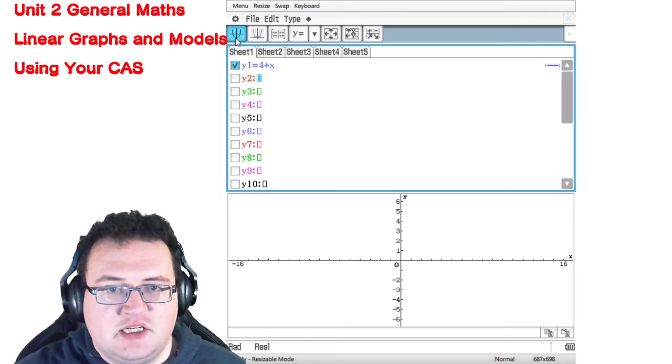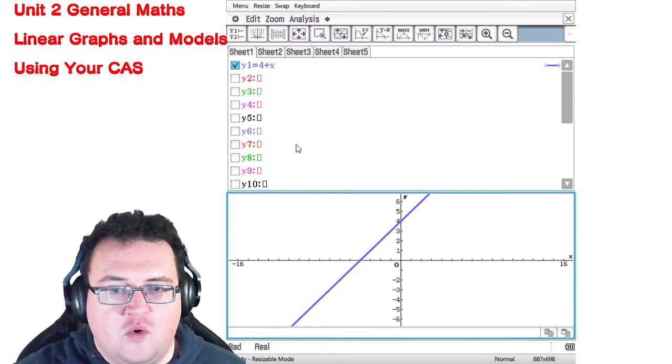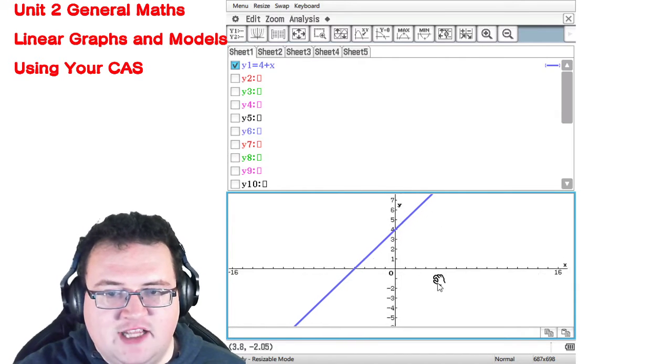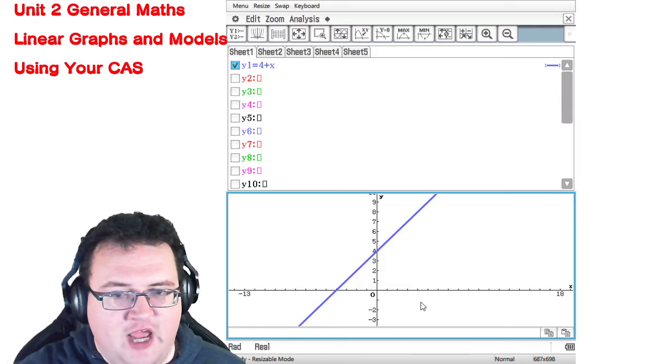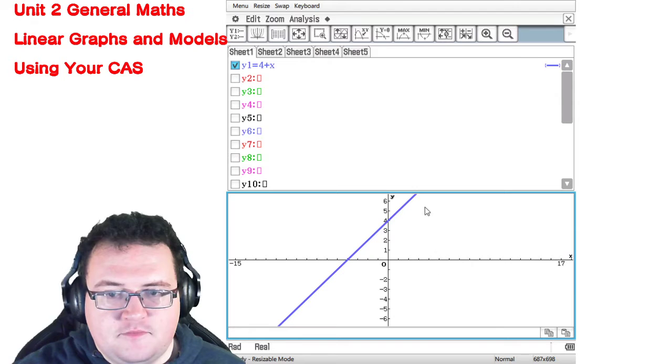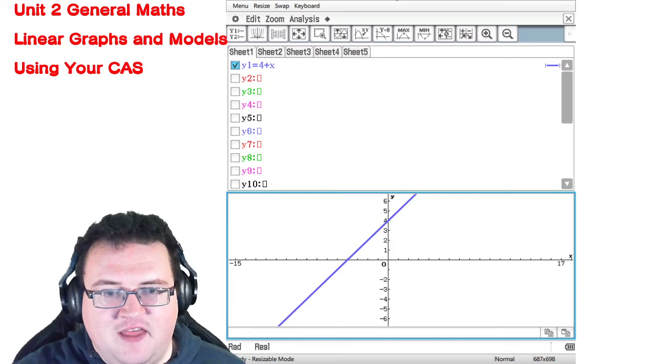If I press the graph button in the top right corner, it pops down to the lower window and it generates a graph for me to look at. And then I can move this around and manipulate it that way.